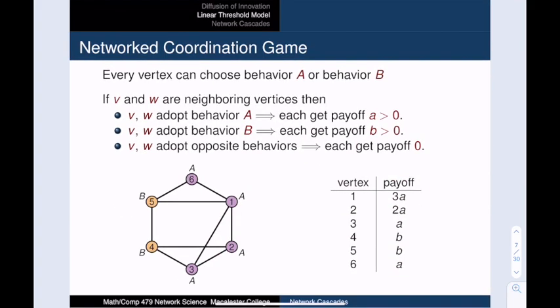But let's take a step back and build the linear threshold model from the ground up. We borrow some language from economics and review the adoption of innovation as a coordination game between vertices. Each vertex chooses between behavior A and behavior B. When neighbors V and W coordinate, meaning that they choose the same behavior, they get a payoff. The value of this payoff depends upon the behavior. In other words, the payoff for behavior A could be bigger than the payoff for behavior B. Now when V and W do not coordinate, meaning that they choose different behaviors, their payoff is zero.